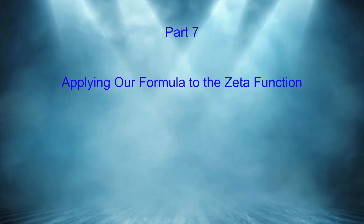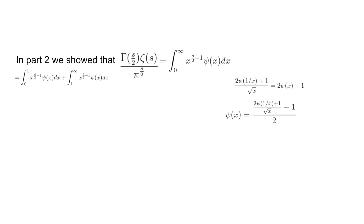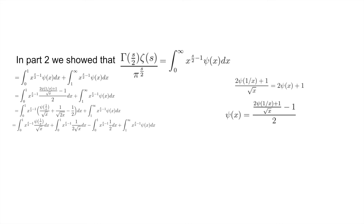Recall from part two that gamma of s over 2 times zeta of s over pi to the power of s over 2 equals the integral from 0 to infinity of x to the s over 2 minus 1 times psi of x dx. We split this into two parts: one from 0 to 1 and another from 1 to infinity. Using the relation we just proved for psi, we rearrange it and plug it into the first integral, then simplify and split that integral apart.